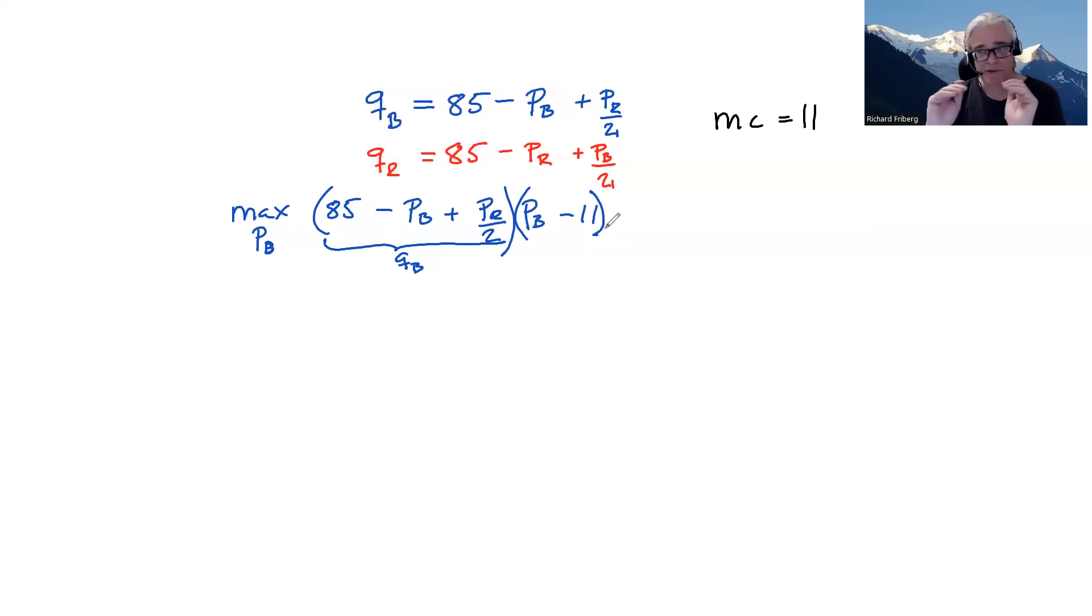Okay, so as usual in microeconomics at this level, the profit function, I think of that as a hill, and we use calculus to find the top of the hill. So the first order condition for profit maximization, so finding the point where the slope of the profit function equals zero, we do that by differentiating this profit function with respect to PB.